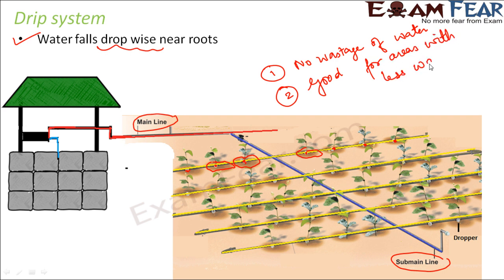Both the sprinkler system and drip system aim to save water, while also saving human effort and time. These are the modern methods of irrigation. Irrigation is extremely important because without supplying water, all the efforts put in before irrigation will go to waste. Therefore, it is very important that the field is irrigated on time, either by natural rainfall or by artificial application of water.